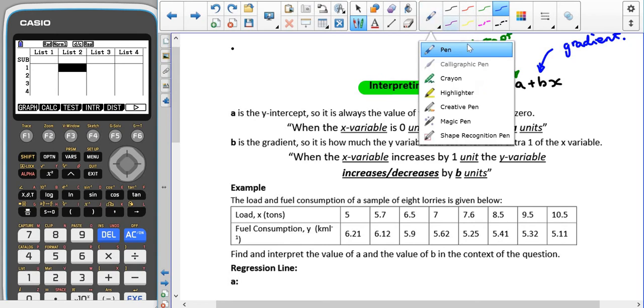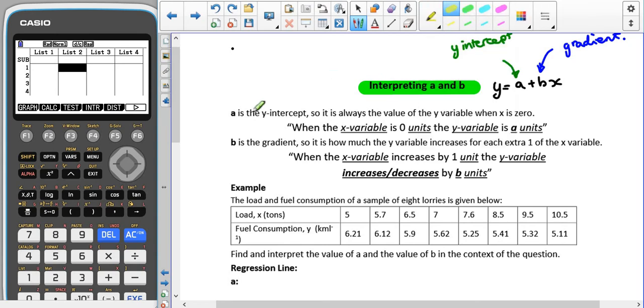So when we talk about a, we're talking about the y-intercept when the x value is zero. So we have to say when the, and we insert there whatever the x variable is, is zero, whatever the x units are, the, whatever the y variable is, is whatever our a value is, and then whatever our units are for y.